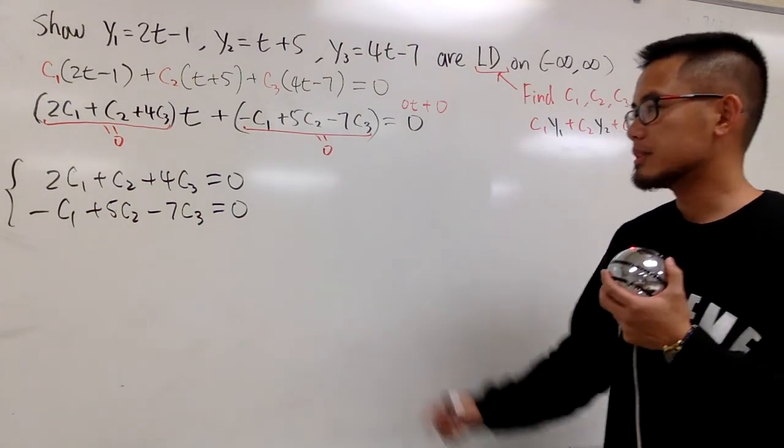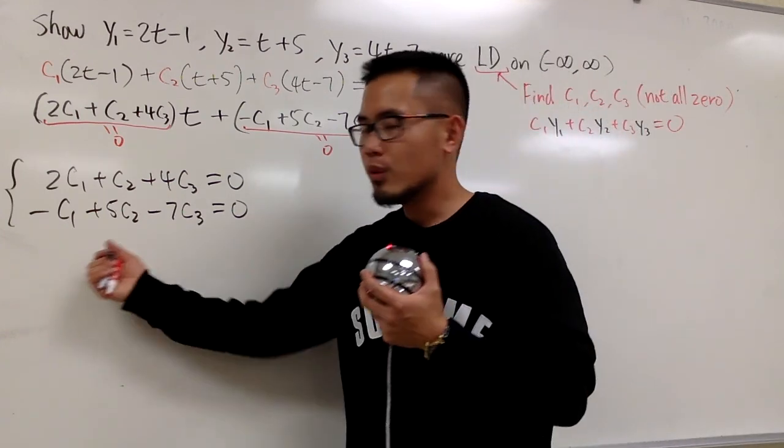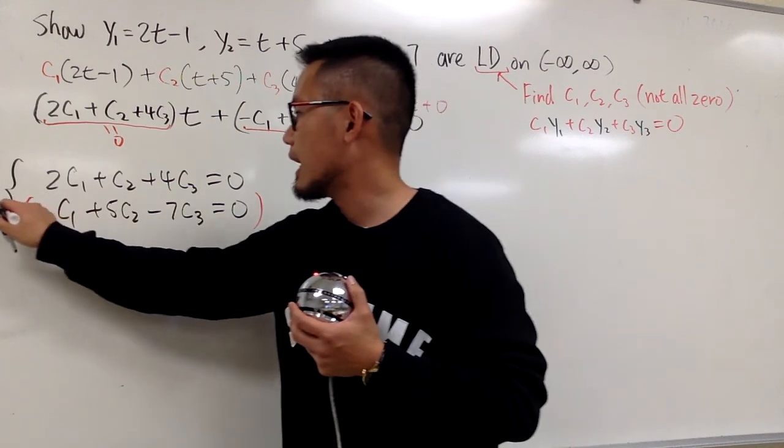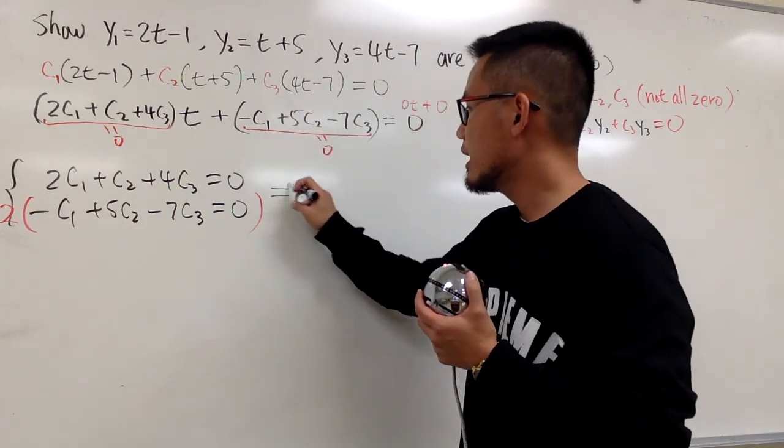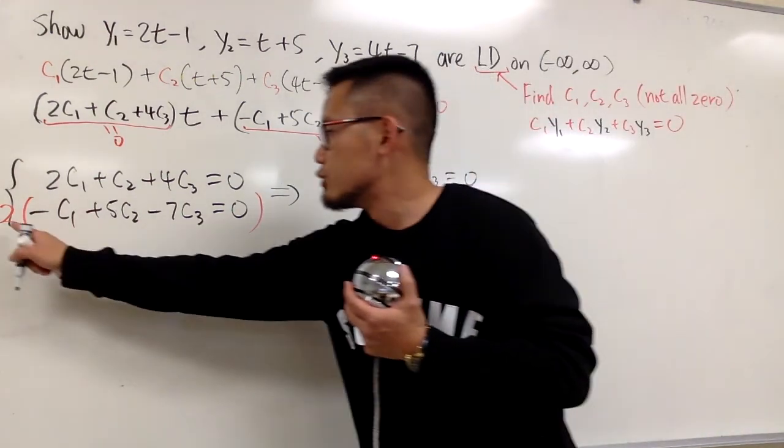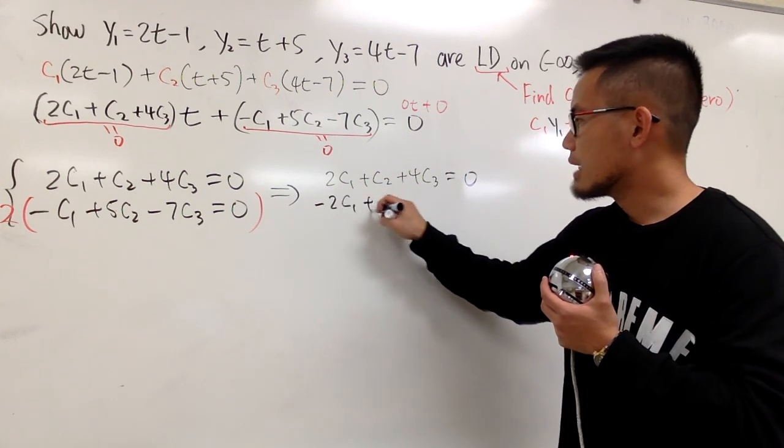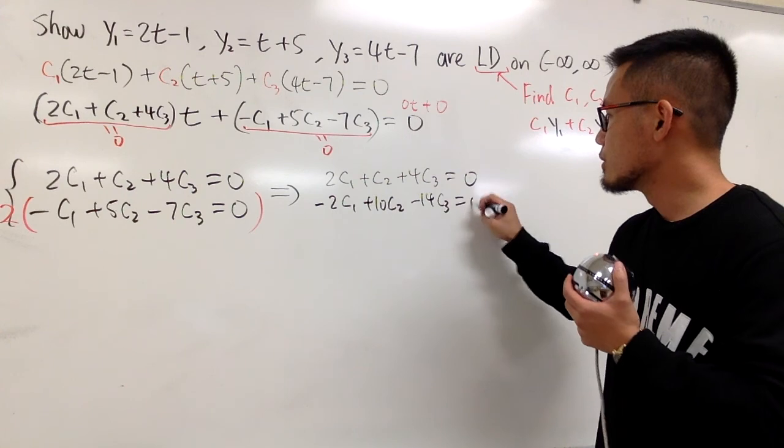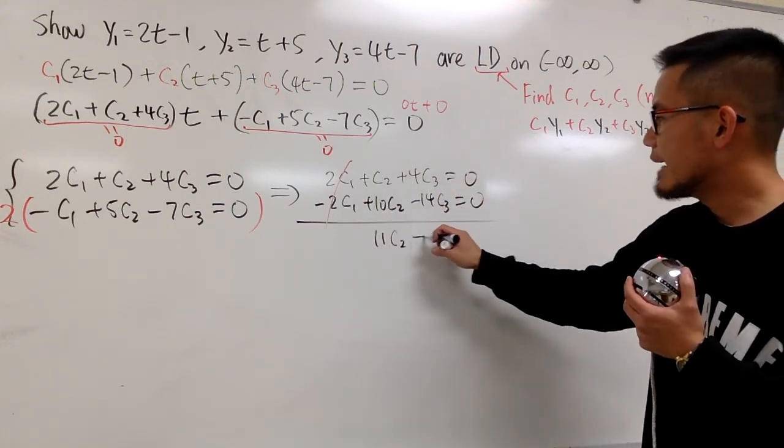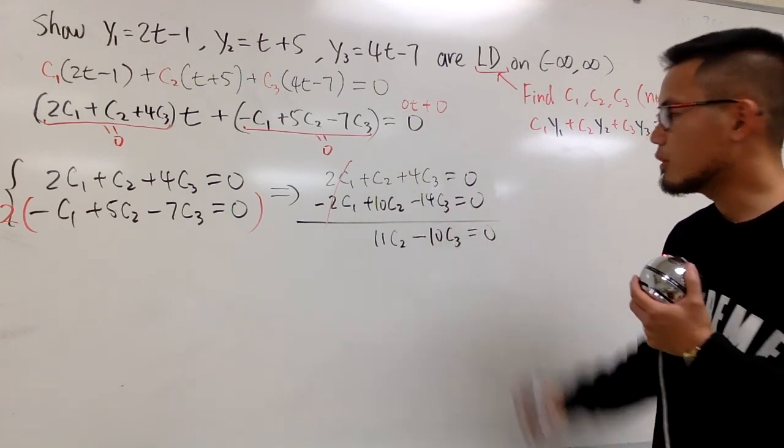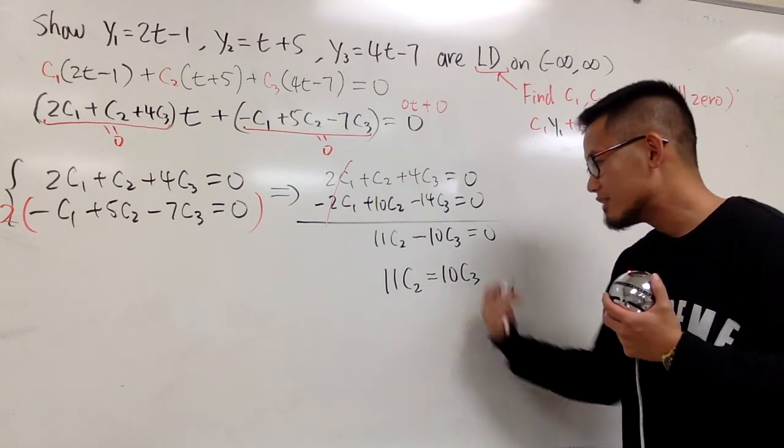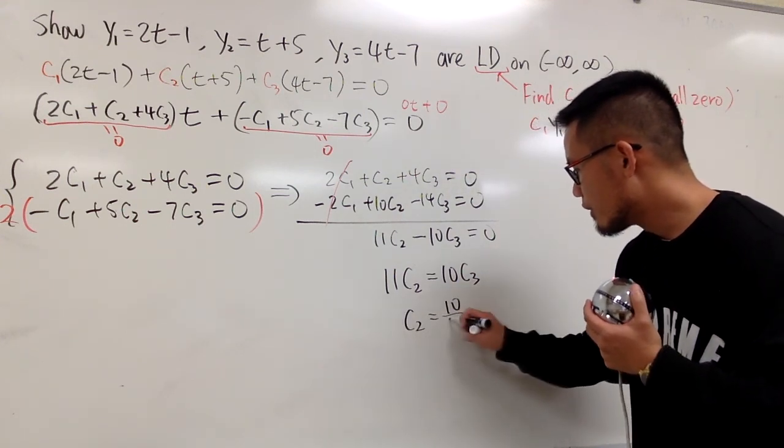And this is the algebra that we can do from here. First of all, we can get rid of the variable first. I see I have 2c1 and this is negative c1. Let me just go ahead and multiply the second equation by positive 2, so that can get rid of the c1. So in that case, we will see this is 2c1 plus c2 plus 4c3, still equal to 0. Distribute the 2, we have minus 2c1 plus 10c2 minus 14c3 equal to 0. Just do that algebra. And combine, this will be gone. This right here is 11c2. This right here is minus 10c3 and this is equal to 0. And let me just add the 10c3 on both sides. So we have 11c2 equals to 10c3. We divide 11 on both sides. We get c2 equals to 10 over 11 times c3.